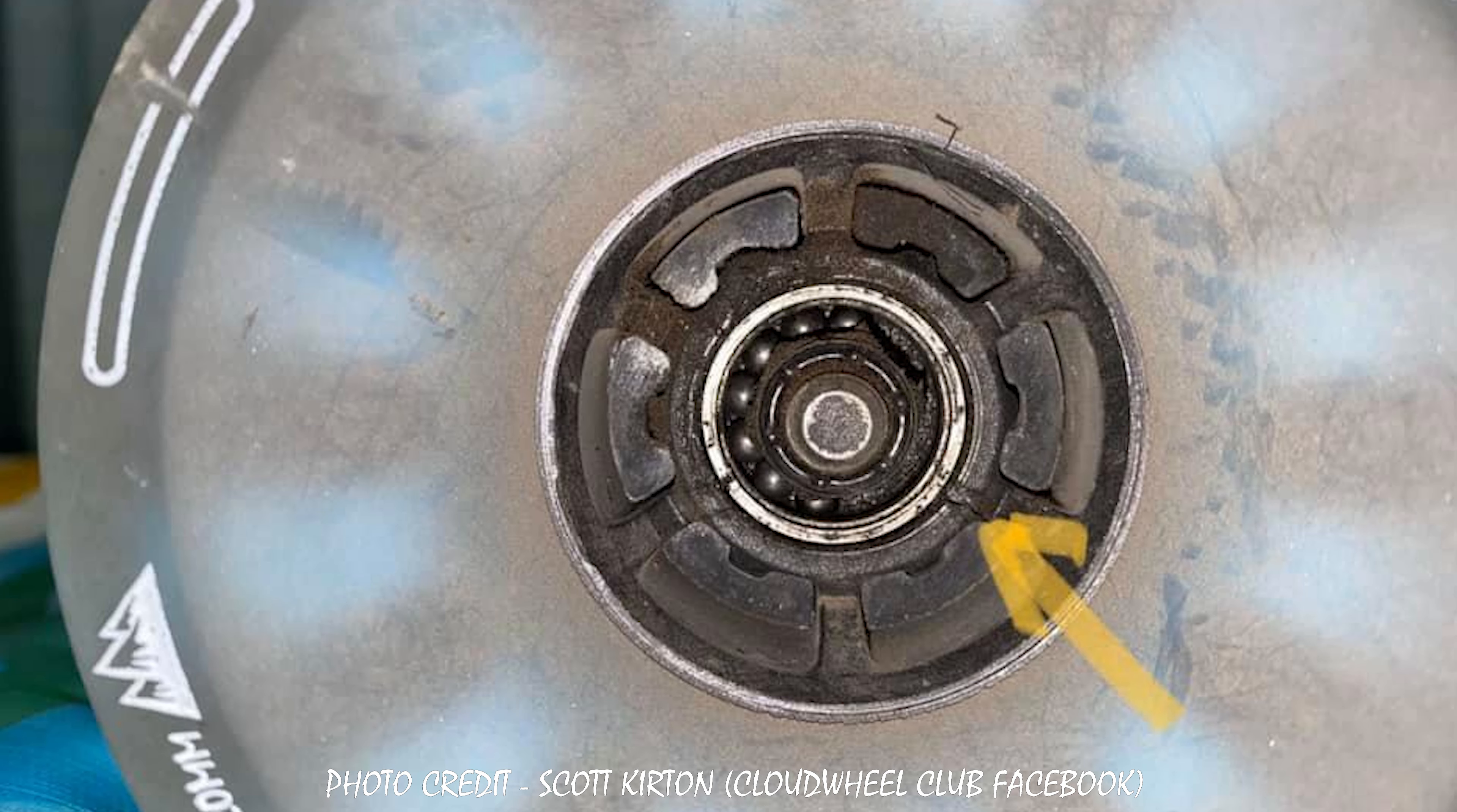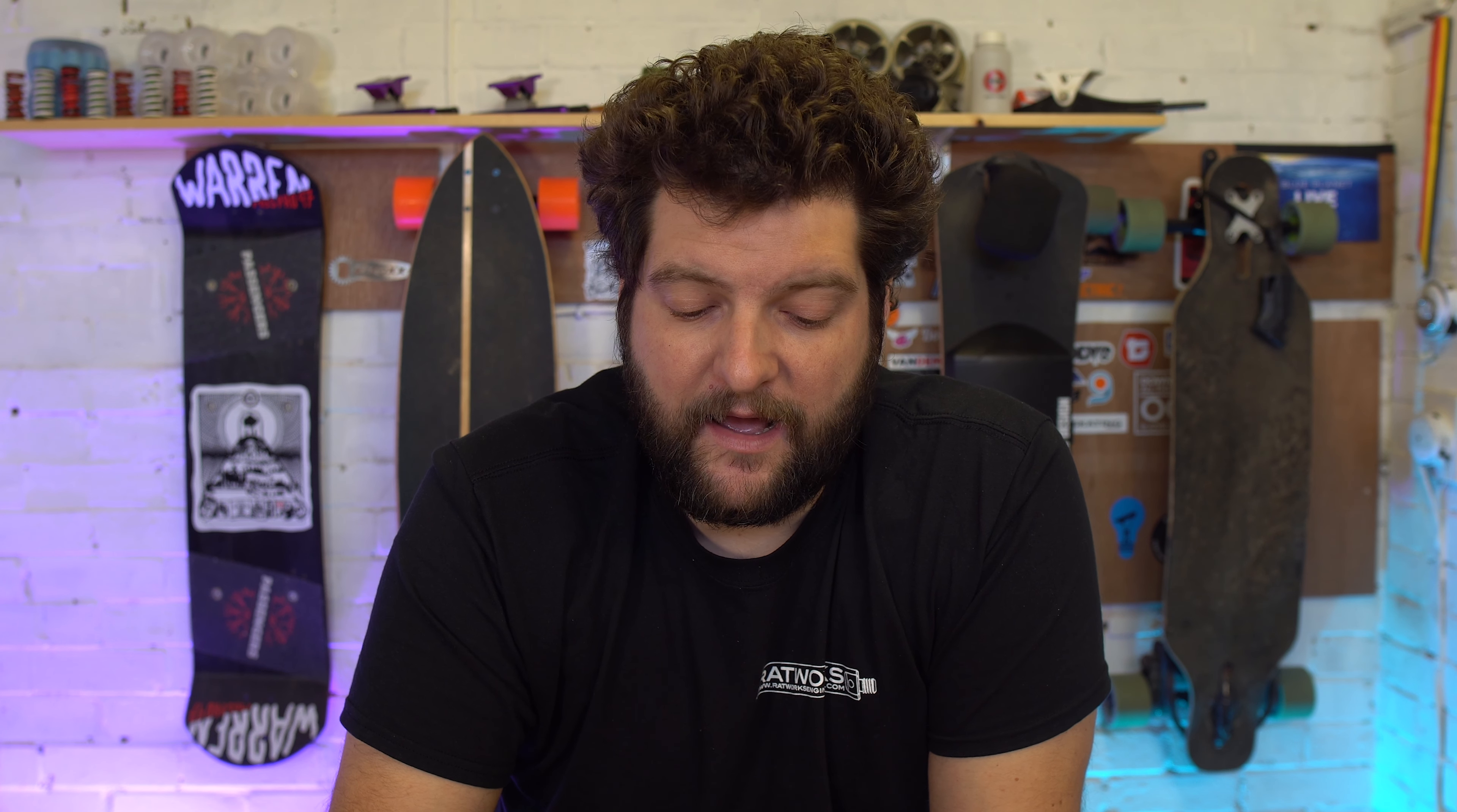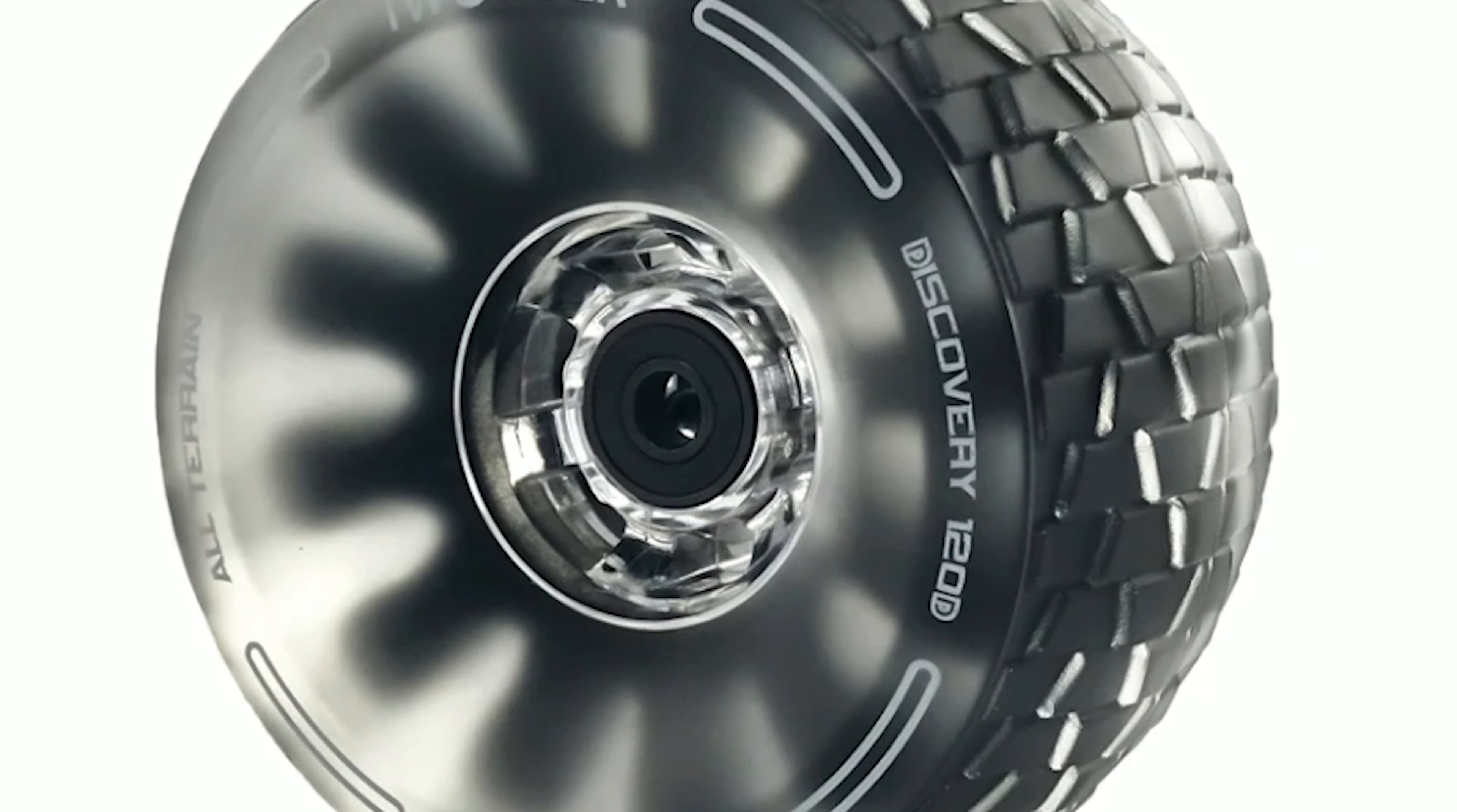But it might have been a blessing in disguise. You guys are fully aware of the drama surrounding these wheels - cores cracking and blowing out, people losing wheels as they're riding. Not good. i-Wonder have responded and made an updated core called the discovery. You can tell it's the discovery because the core is clear instead of black.